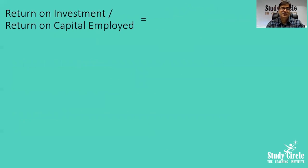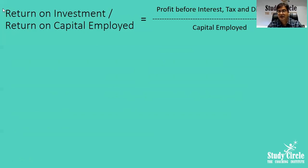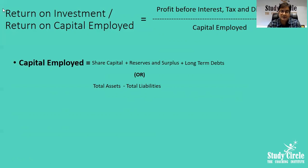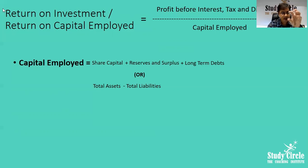The last ratio is return on capital employed, also called return on investment. The formula is profit before interest, tax, and dividend divided by capital employed into 100. Capital employed equals share capital plus reserves and surplus plus long-term debts — that is owned funds plus borrowed funds. Alternatively, capital employed equals total assets minus current liabilities. For more detail on capital employed, refer to the debt-equity ratio video.